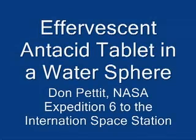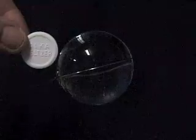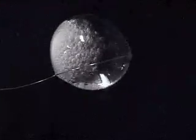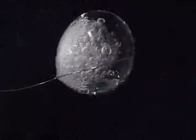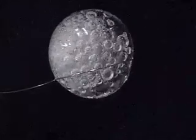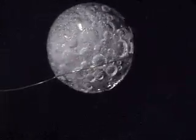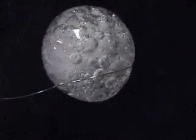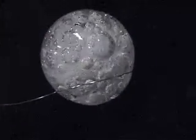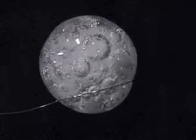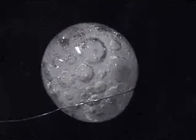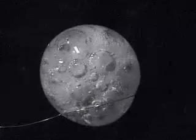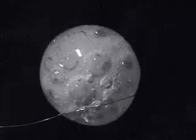Effervescent antacid tablet in a water sphere. Here's a sphere of water 50 millimeters in diameter with an effervescent antacid tablet. Bubbles form rapidly from a chemical reaction. This is an example of heterogeneous nucleation where bubbles form on a solid surface and can get a momentum exchange and travel out into the fluid.